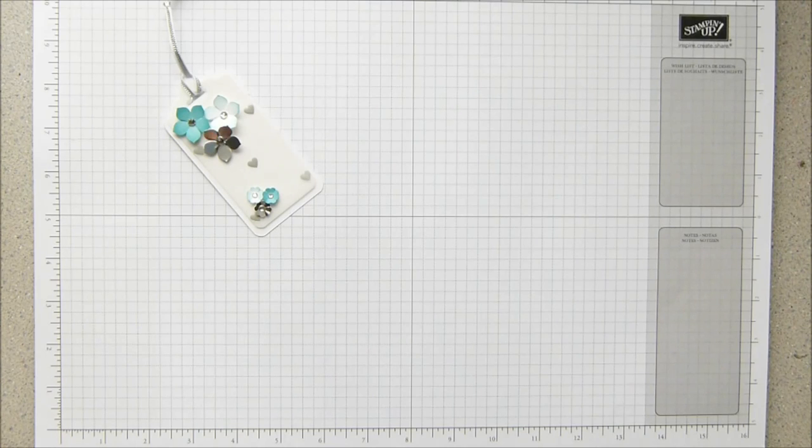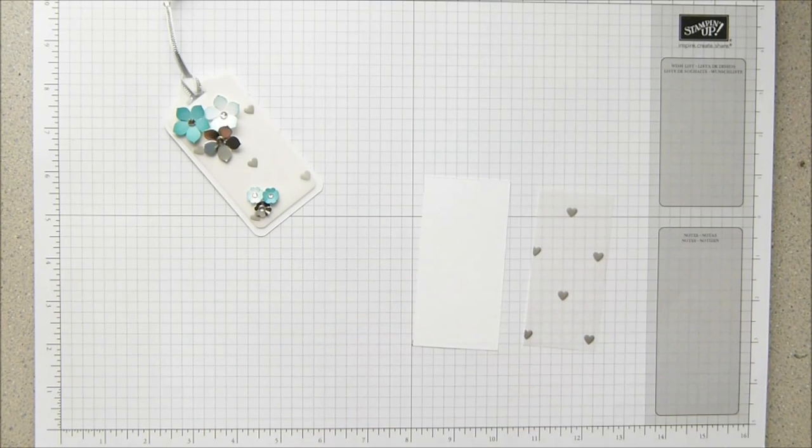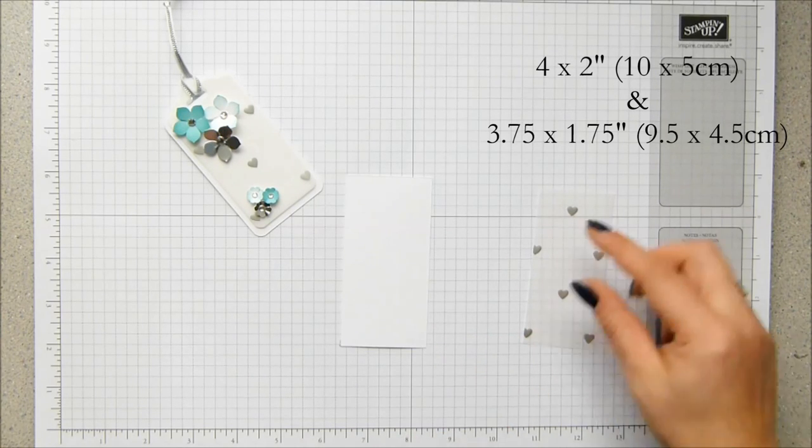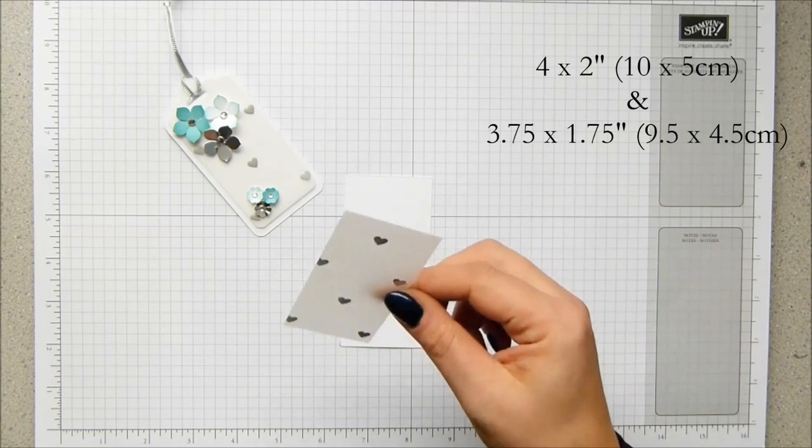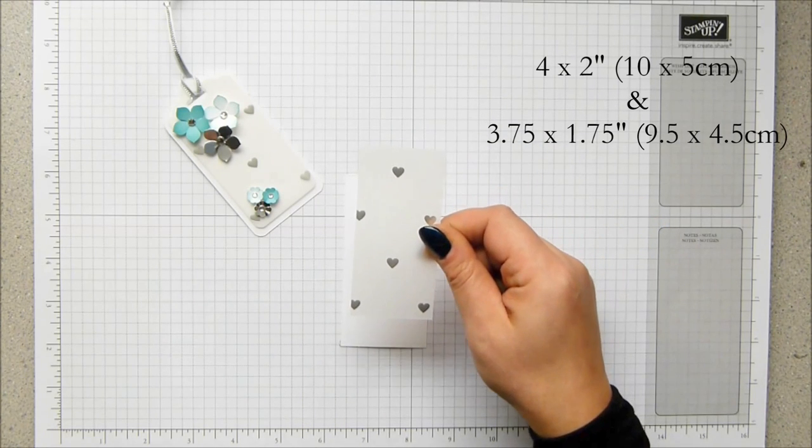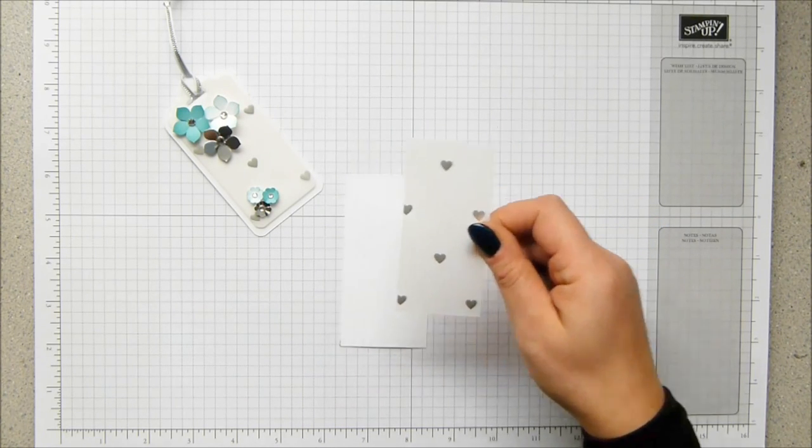Super duper easy, you need a piece of cardstock that measures four by two inches, which is this whisper white one here, which is 10 by five centimeters. And then I'm using a piece of the beautiful foil vellum, which is three and three quarters by one and three quarters, which is 9.5 by 4.5 centimeters.